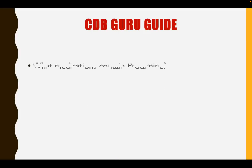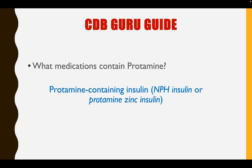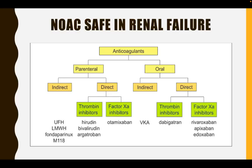This is your guru guide: what medications contain protamine? What contains protamine is NPH insulin, also known as protamine-zinc insulin. Don't forget: the onset of action of regular or rapid insulin is within 30 to 60 minutes. What novel oral anticoagulant is safe in renal failure? It is apixaban.